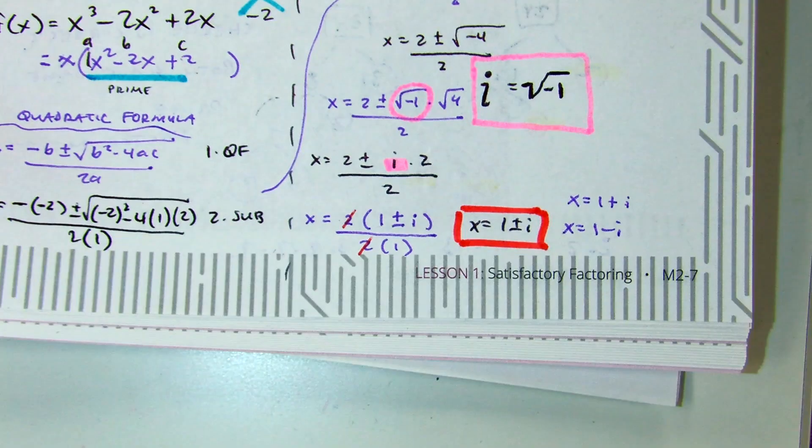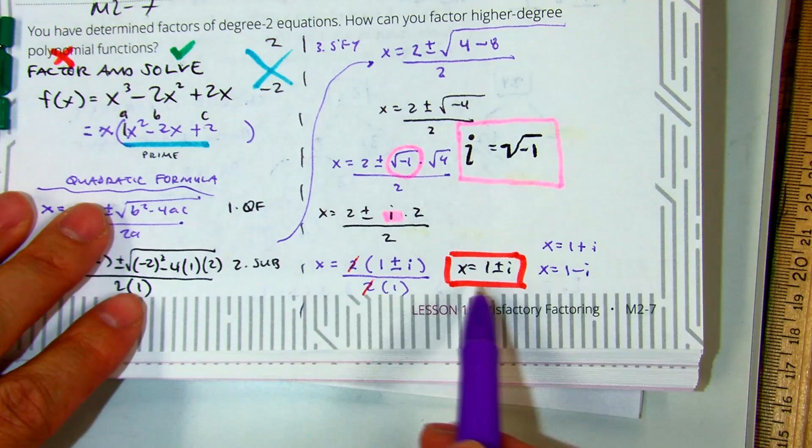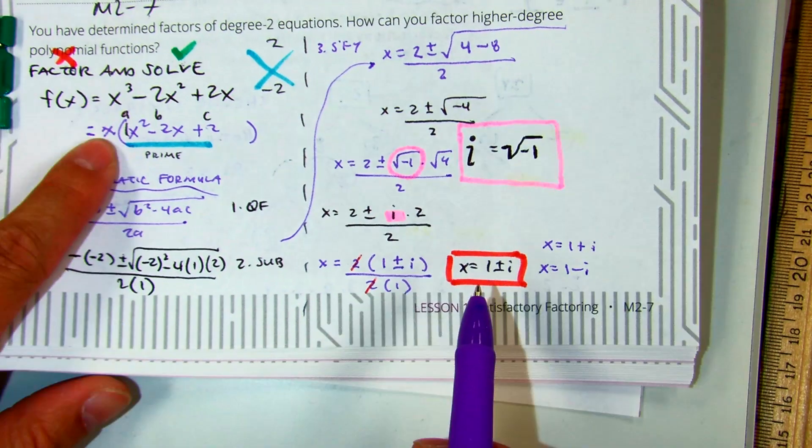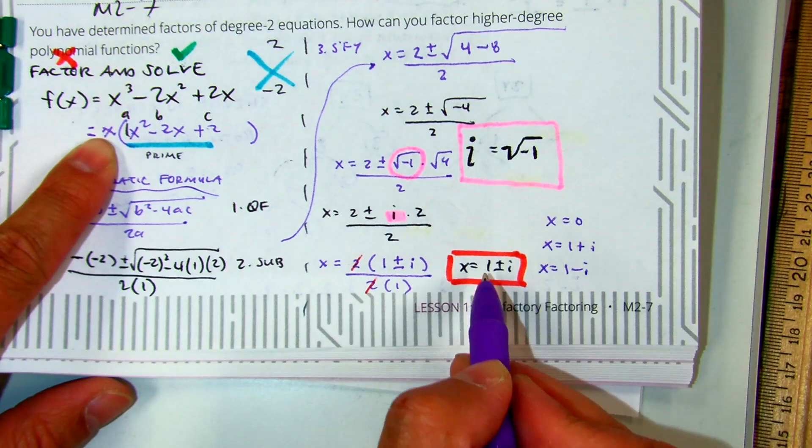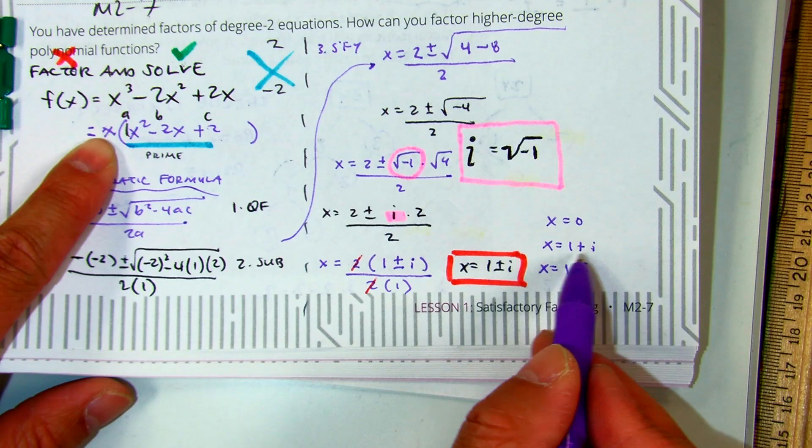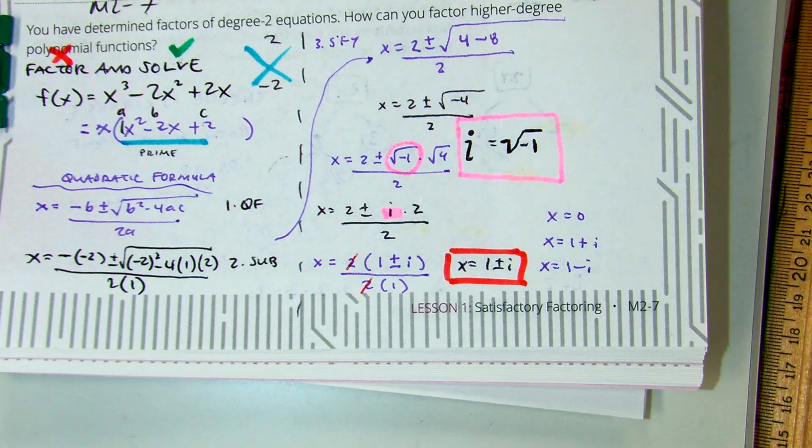So in this problem, because it is a cubic function, although we did the blue one, your three solutions will be x equals 0, and then 1 plus i and 1 minus i, which is two solutions. So you have a total of three solutions.